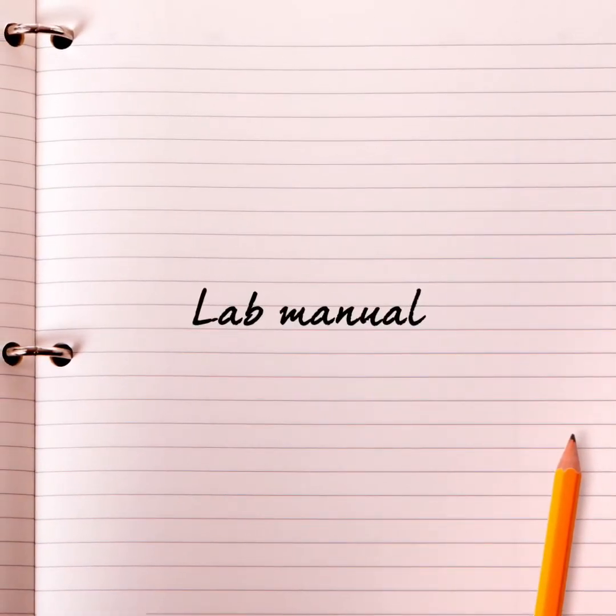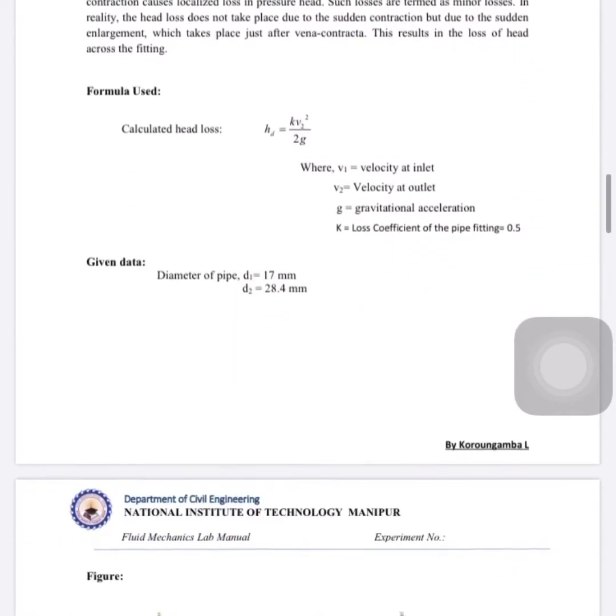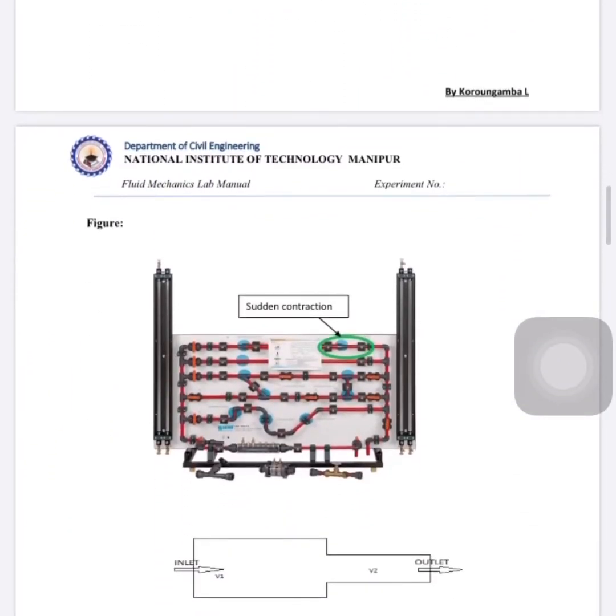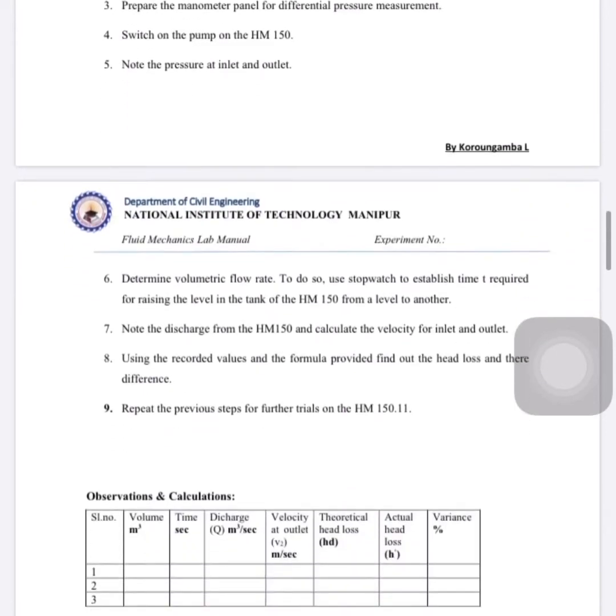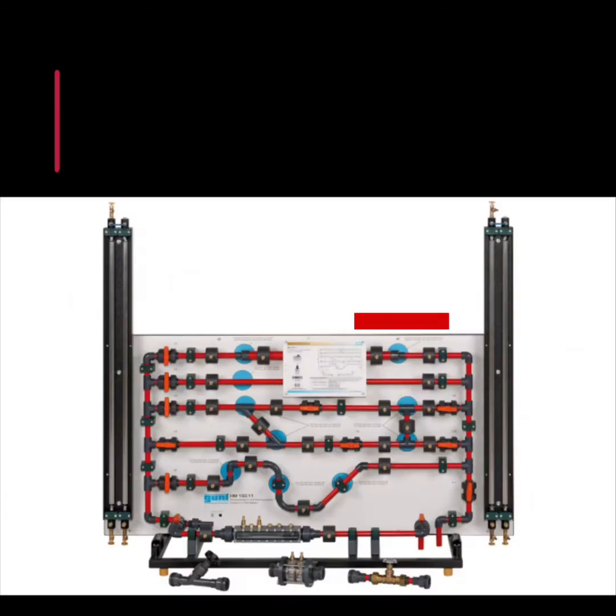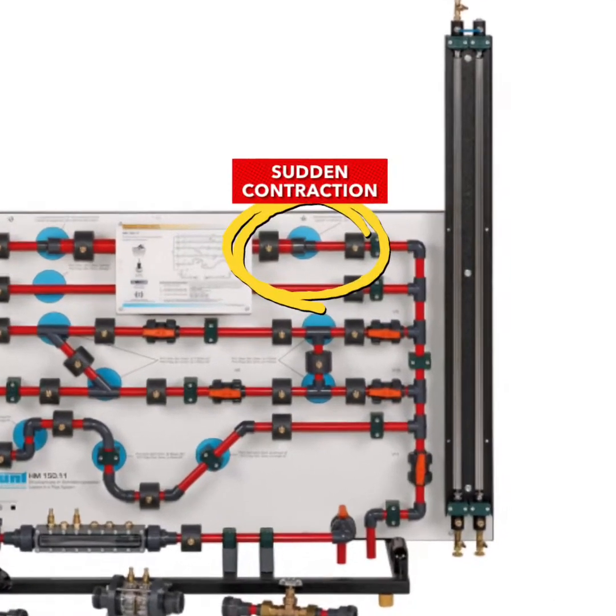This experimental unit is called SM 150.11. This experimental unit allows us to study the pressure losses in pipes, piping elements, and set of devices. For today we'll be doing an experiment of head loss due to sudden contraction.